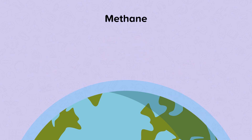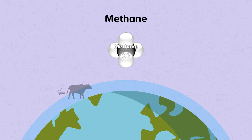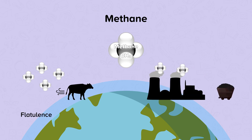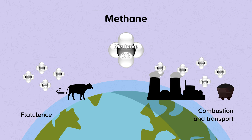Methane is a compound made up of one carbon atom and four hydrogen atoms. It is produced naturally in the guts of animals and is released during flatulence. It is also produced as a waste product of the combustion of coal in power stations, as well as during the transport of coal.